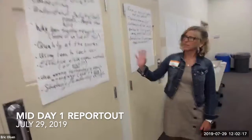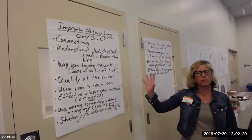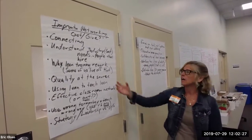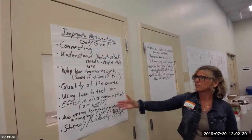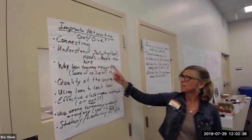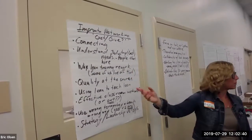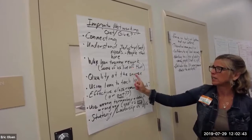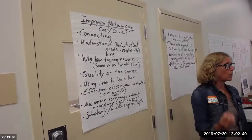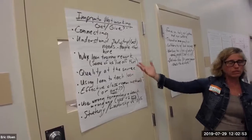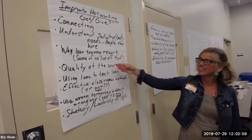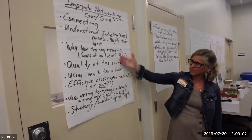Okay, so we made this list. What we did individually was we said, what do we want to get out of the conference, and then we also said, what would we be able to give or provide. This list is everything — it's not separated into either category. Connecting with other people is something we all want to do. Understand the industry, the customer, the needs, and the people that are hired. And why lean training rework — why do we have to keep retraining? What is happening with the original training? Quality at the source, same thing. Using lean to teach lean — that's the message for those three.